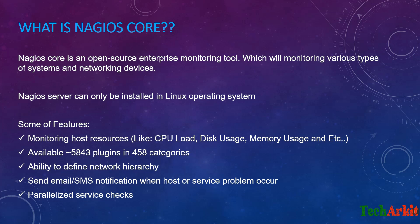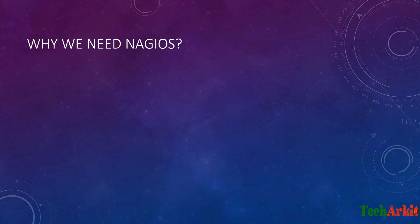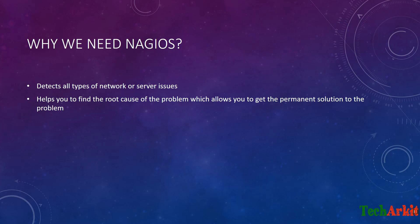Nagios supports parallelized service checks, meaning it checks multiple services at the same time. This is why we need Nagios: it detects all types of network or server issues and helps you find the root cause of a problem, allowing you to get a permanent solution. That is the major achievement for most technical and operations people — resolving issues permanently and enabling active monitoring of your entire infrastructure and business processes.